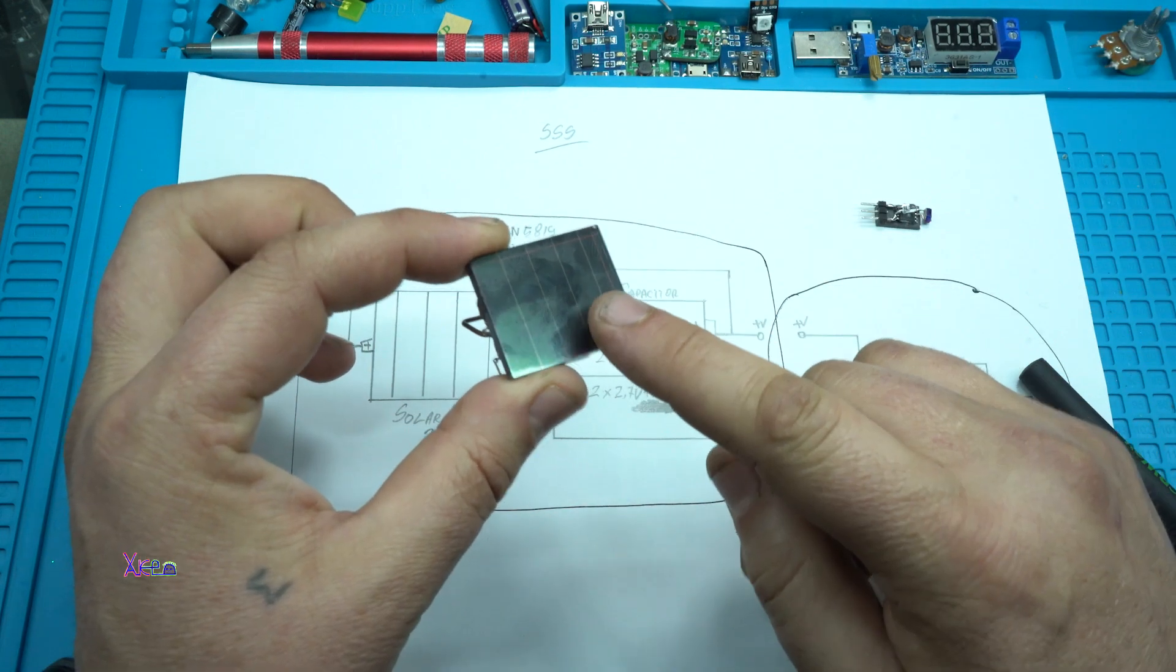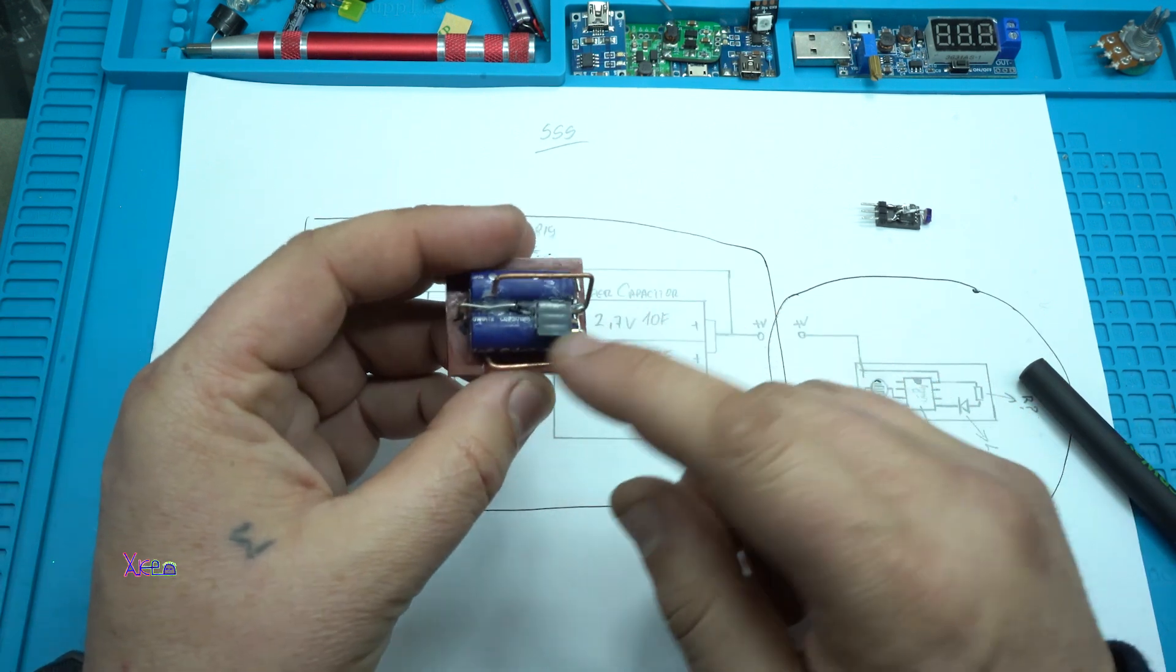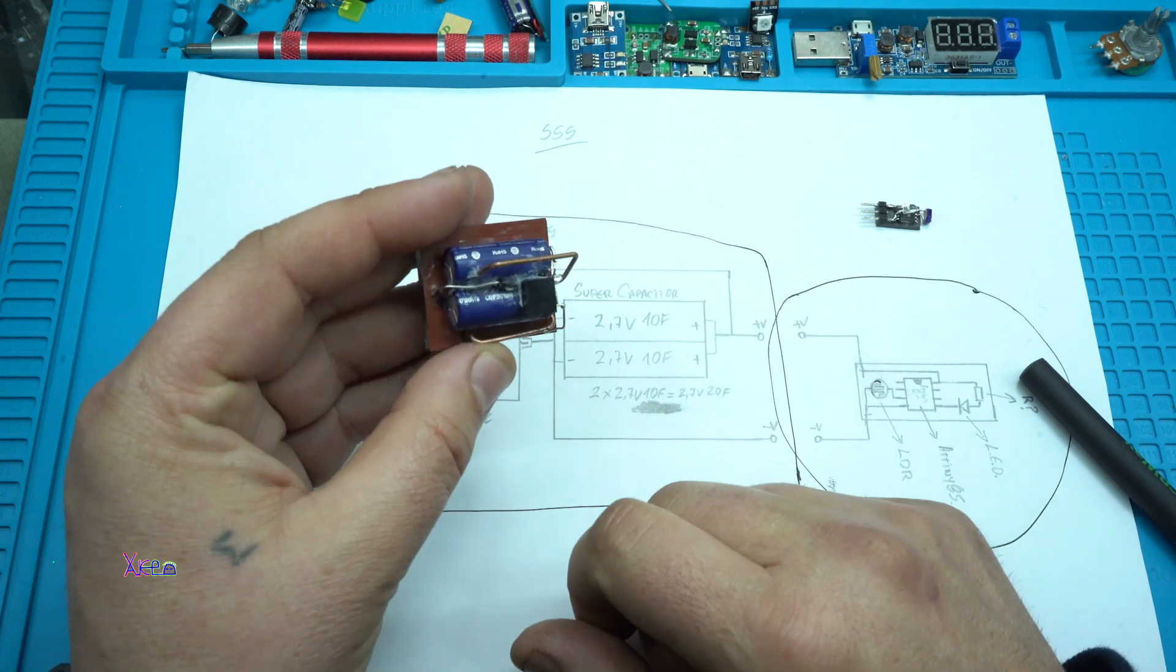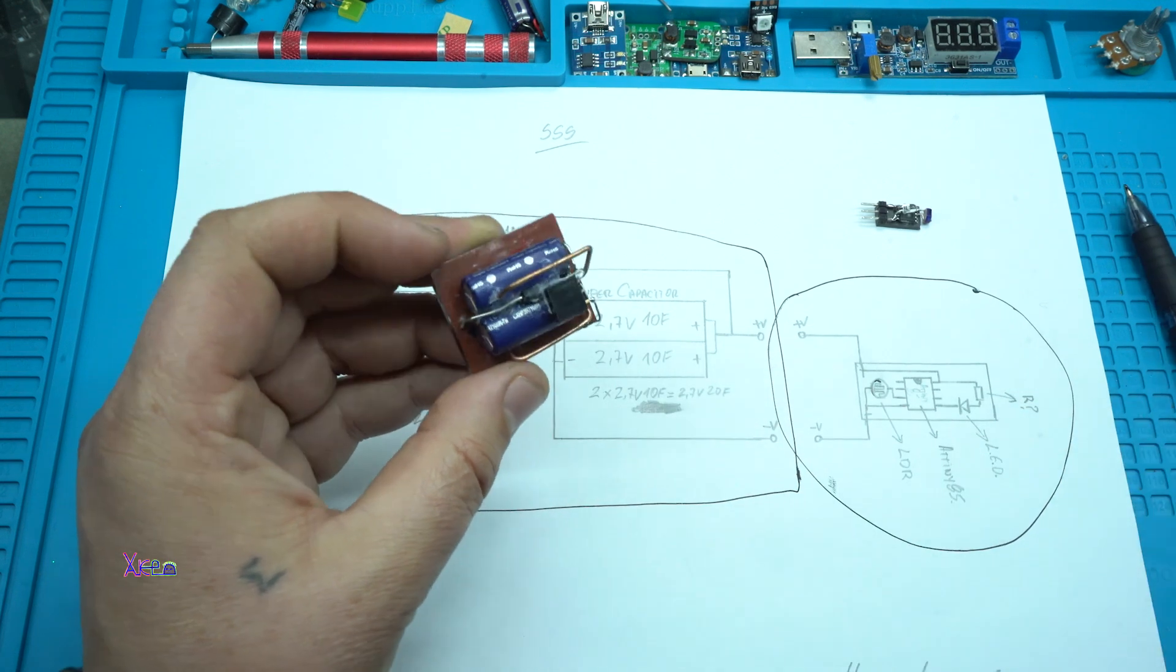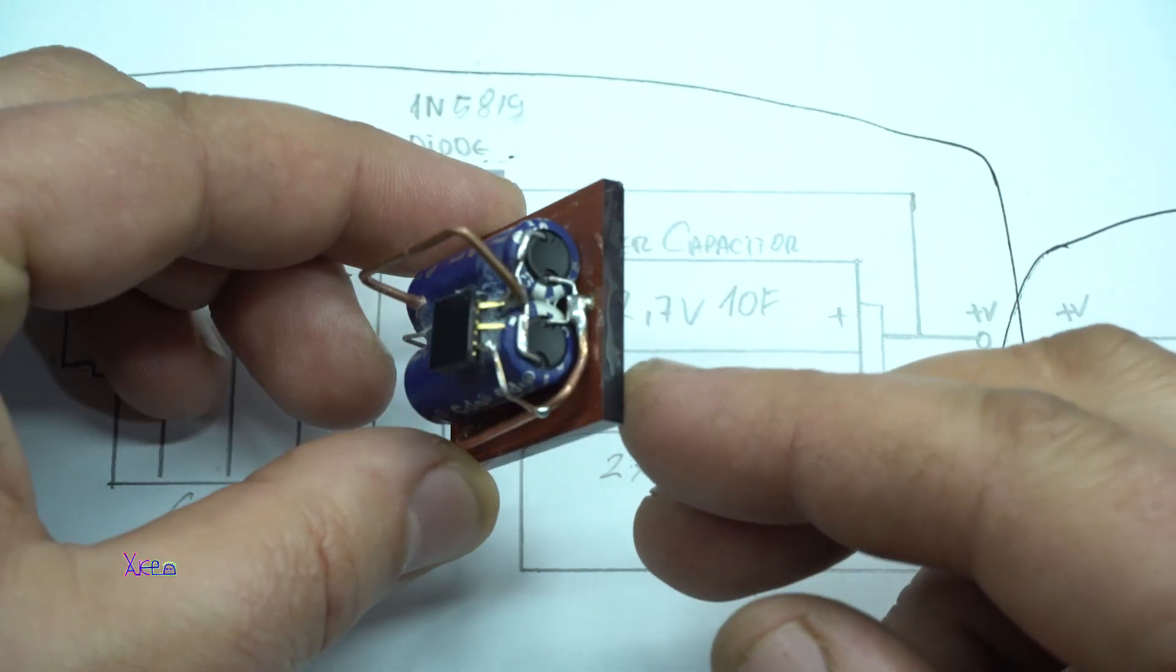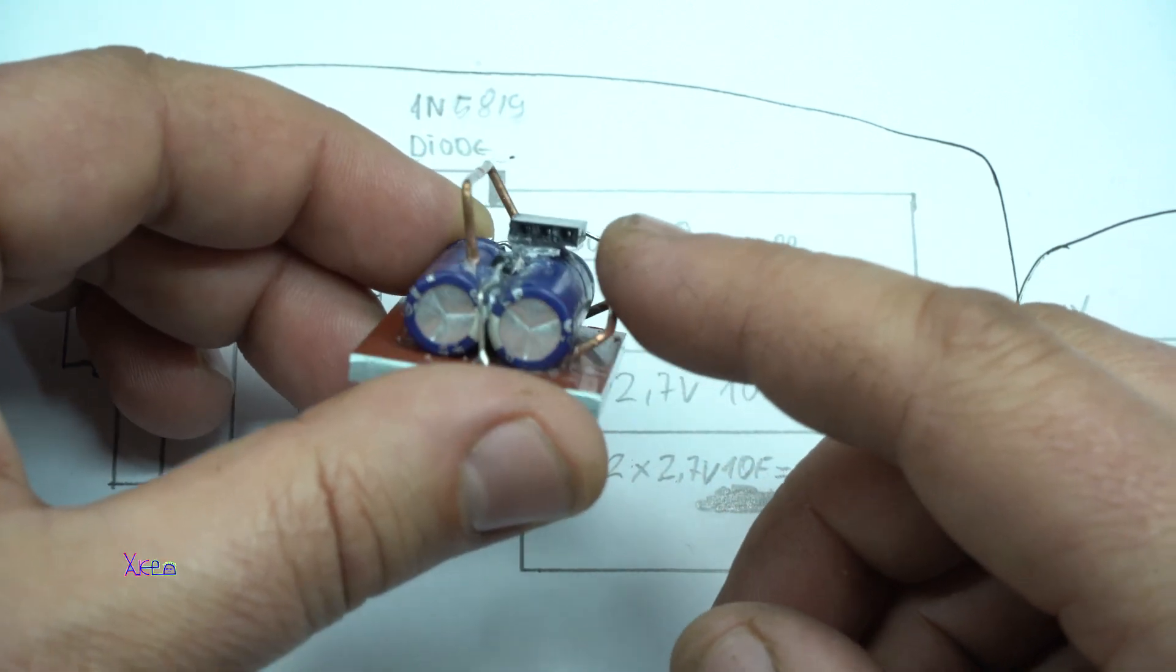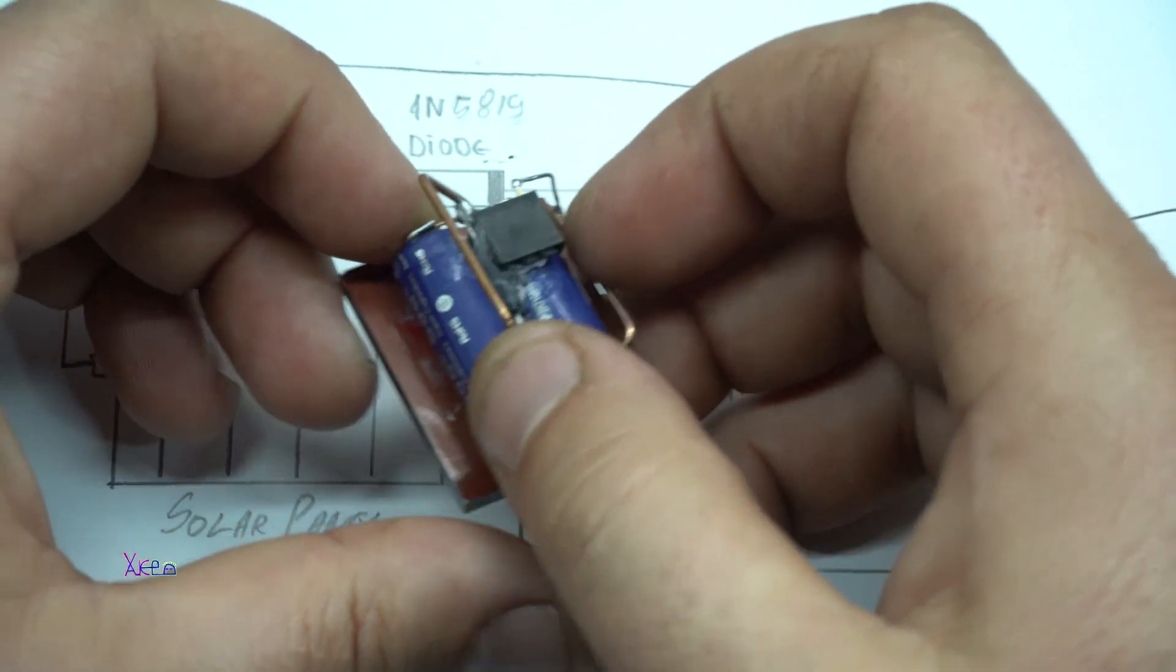This model has a solar panel, the super capacitors - two of them in parallel, 2.7 volts 20 farads, and here's the diode. Here's the connector for connecting the second model with the ATtiny85 microchip.